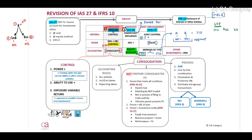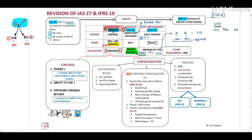IAS 27 indicates to us that in the parent's separate records, in his financial statements, the parent can either recognize the investment at cost, at the equity method, or as a financial asset in terms of IFRS 9 and IAS 32.